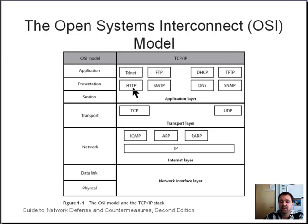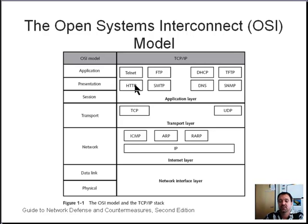The application layer protocols include HTTP, SMTP, DNS (Domain Name Service), SNMP, TFTP (Trivial File Transfer Protocol), DHCP (Dynamic Host Configuration Protocol), FTP, and Telnet — all of which fall under the application layer.